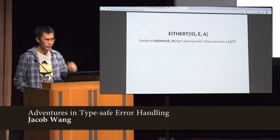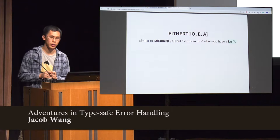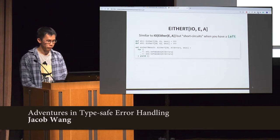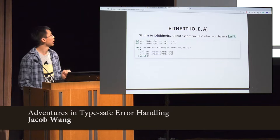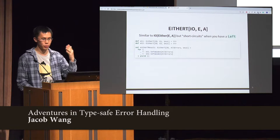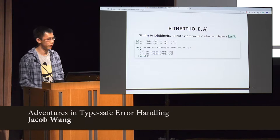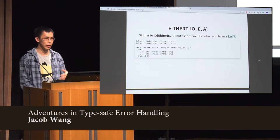And soon you encounter EitherT from Cats and similar. It's similar to IO[Either] — you can think of it as a thin wrapper around it. What it does is it short-circuits whenever you get a Left value, as you can see from the type signature. But here's a problem: I have two different errors, E1 and E2. In the previous examples they all chained fine, and the Scala compiler was able to infer the common error type. But I can't do that here with EitherT, because EitherT is invariant — you can see there's nothing around the E there.